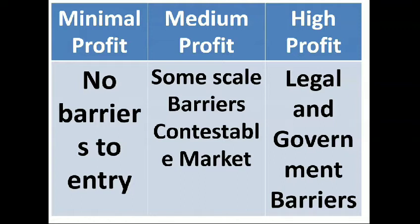For example, in perfect competition, you just have to present your business permit and sanitary standards, or have a suitable place for engaging the market. But in medium profit — under oligopoly and monopolistic competition — there are some-scale barriers and it is called a contestable market, because they should have a specific or allocated amount of money in maintaining and supplying the market.